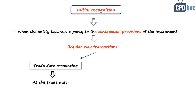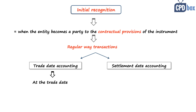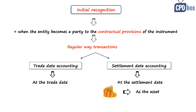The second option is settlement date accounting, where an entity recognizes an asset bought and de-recognizes an asset sold on the date when the asset is delivered — the settlement date. There may be a complication when buying the asset, as the fair value may change between the trade date and settlement date. You account for that change in the same way as the asset itself, depending on its classification.